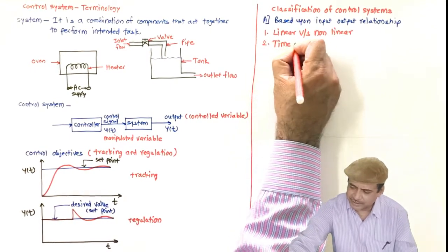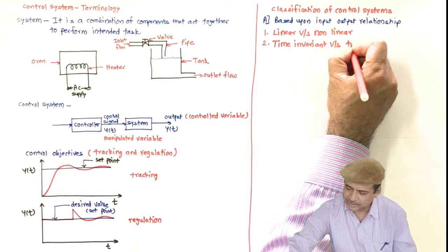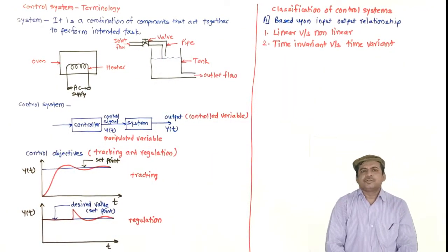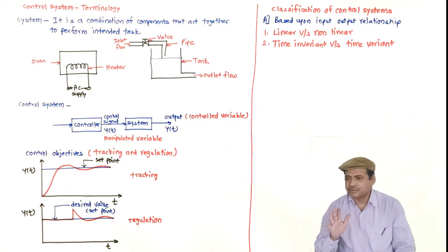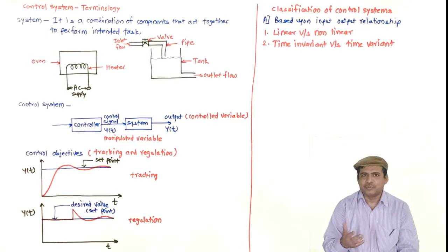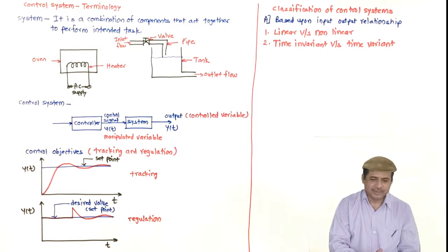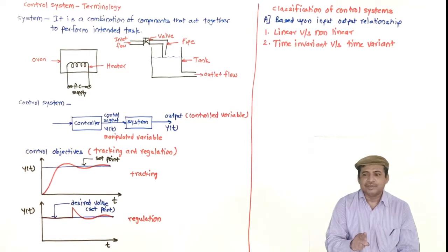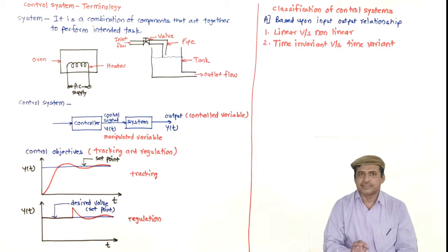The next classification is time invariant versus time varying. A system is said to be time invariant if its input-output relationship does not change with time. If the input-output relationship changes with time, then it is a time varying system. This entire course deals with continuous time linear time invariant systems only — systems that are both linear and time invariant.